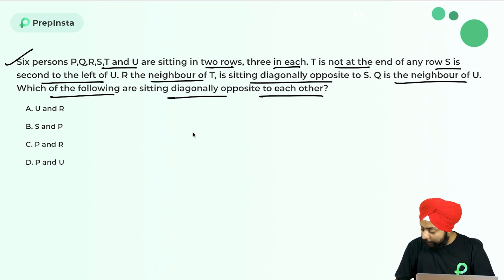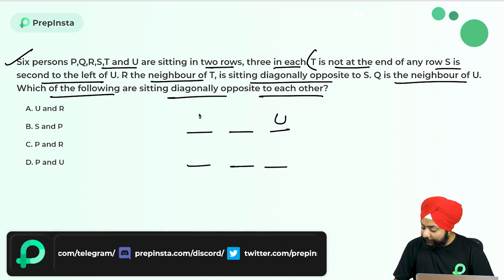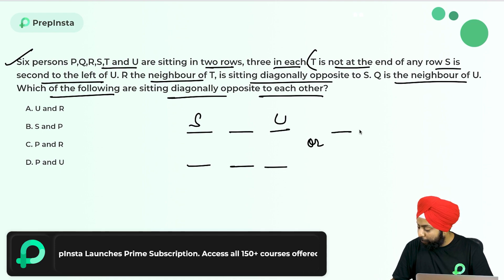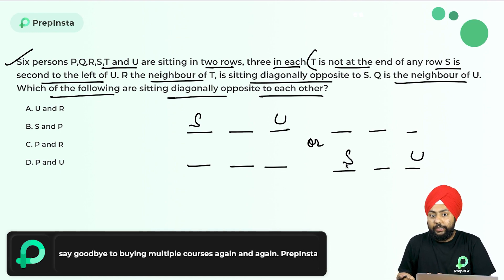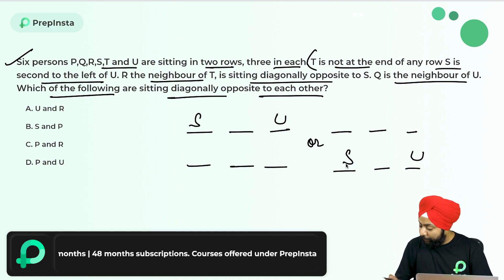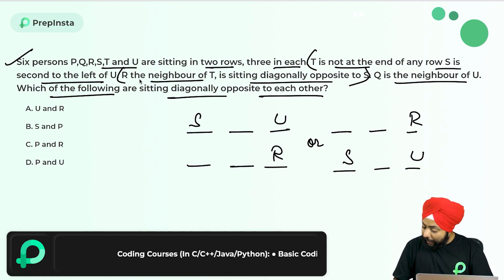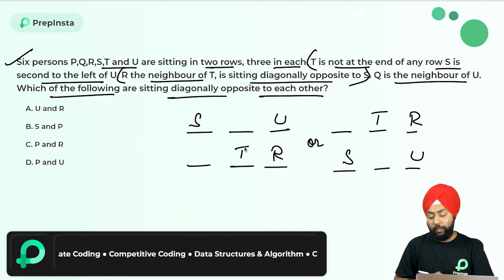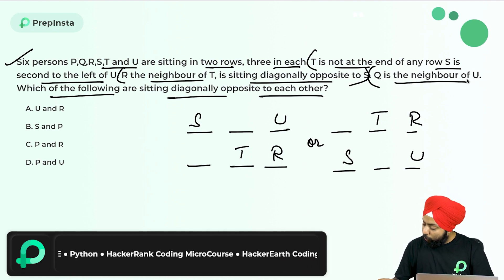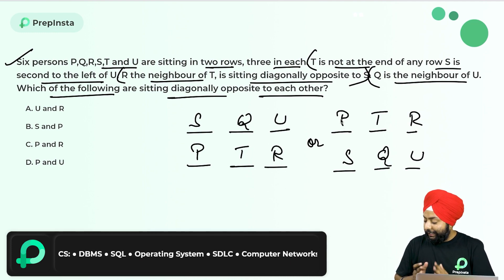There are two rows, so let me draw two rows. T is not at the end of any row, so T will not come at any end. S is second to the left of U — if U is here, S will be here, but they can be in the second row also. So let me draw one more arrangement where U is here and S is here. Those are the only conditions where S is second to the left of U.